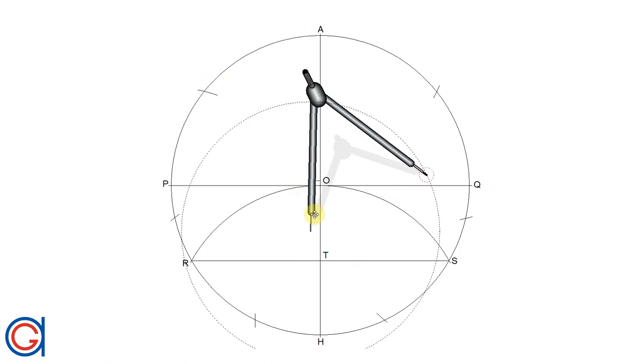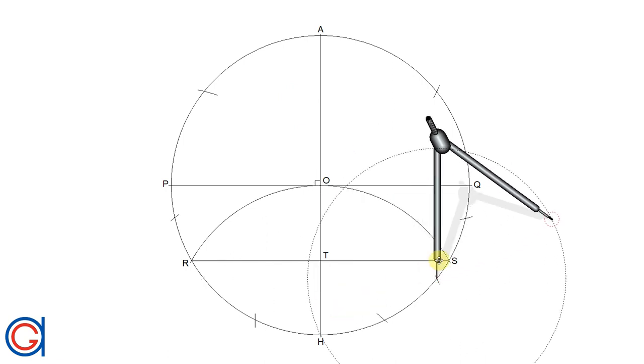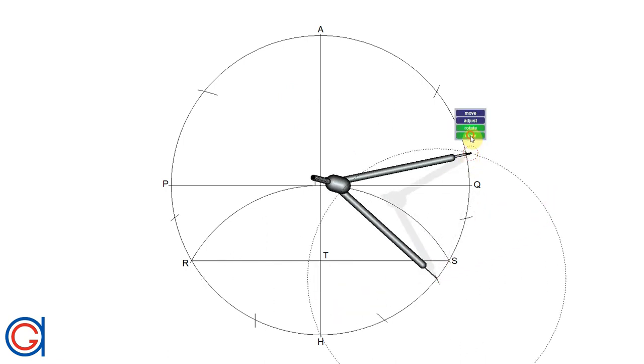Now this time with the same radius and setting our compass on point H we are going to scribe another seven arcs as can be seen here. This divides our previous seven arcs exactly in half.